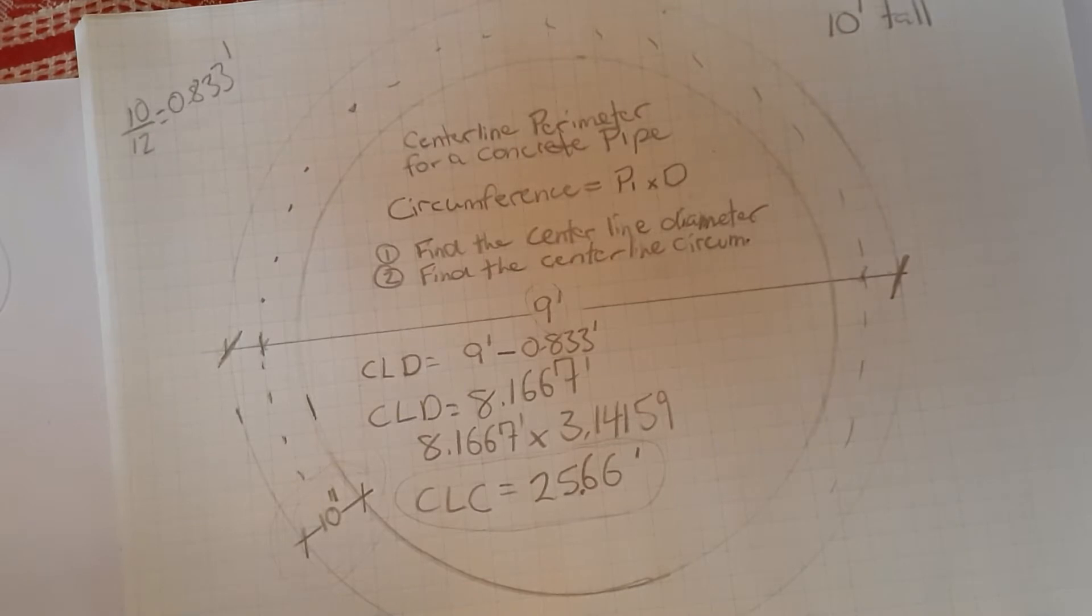So the center line circumference then is going to be the center line diameter of 8.1667 feet multiplied by pi or 3.14159. Then we get a center line circumference of 25.66 feet.